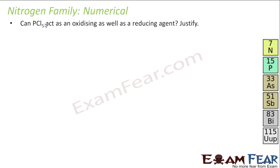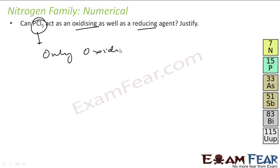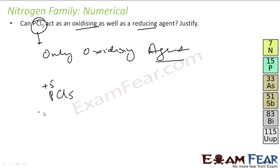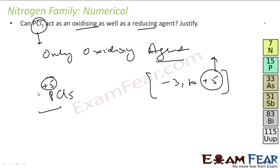Can PCl5 act as both oxidizing and reducing agent? No — PCl5 is only an oxidizing agent. This is because phosphorus in PCl5 has an oxidation state of +5, which is the maximum for group 15 elements (range: -3 to +5). Since it cannot increase further, it can only decrease, meaning phosphorus gets reduced on its own and thereby oxidizes something else. Therefore PCl5 is always an oxidizing agent.